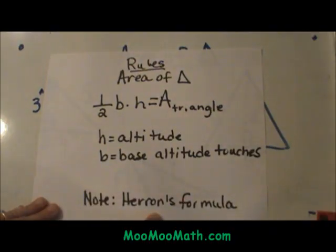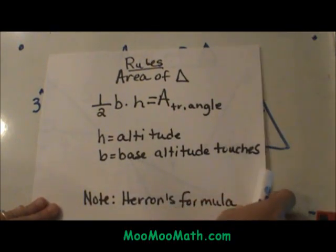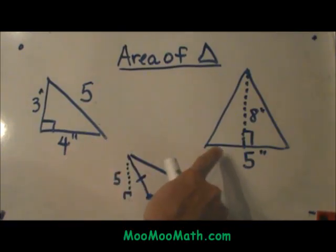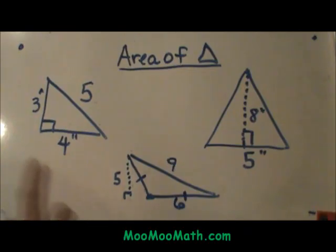There is another video on Heron's formula if you don't have the altitude. Look for that if you need it. Here are three examples. These are the three cases. We have a right triangle, an acute triangle, and an obtuse triangle. It is three separate ways to look at it. Bear with me as I go through each type.